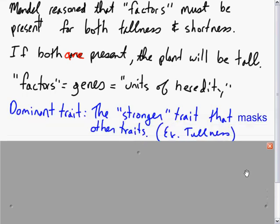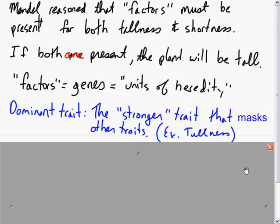Some more definitions. The stronger trait, for example here tallness, will be known as the dominant trait, and that is the trait that masks other traits. If you have two traits present, the one that you see is the dominant trait.